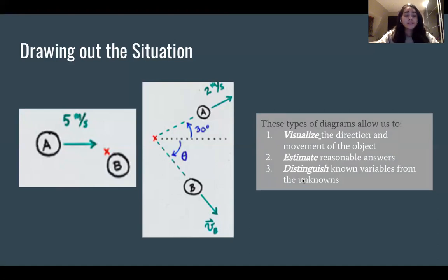And it also helps us distinguish what variables we know and what we don't know. By labeling theta and the velocity of B, we know that these are the two main variables that we don't have an answer to. Whether or not we solve for each and every one of them, it does rule out things that we can and cannot do in terms of our process for solving.